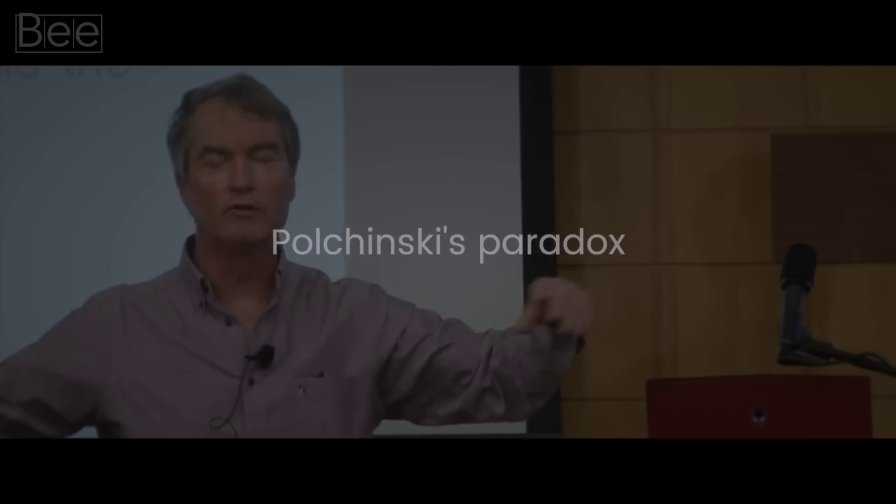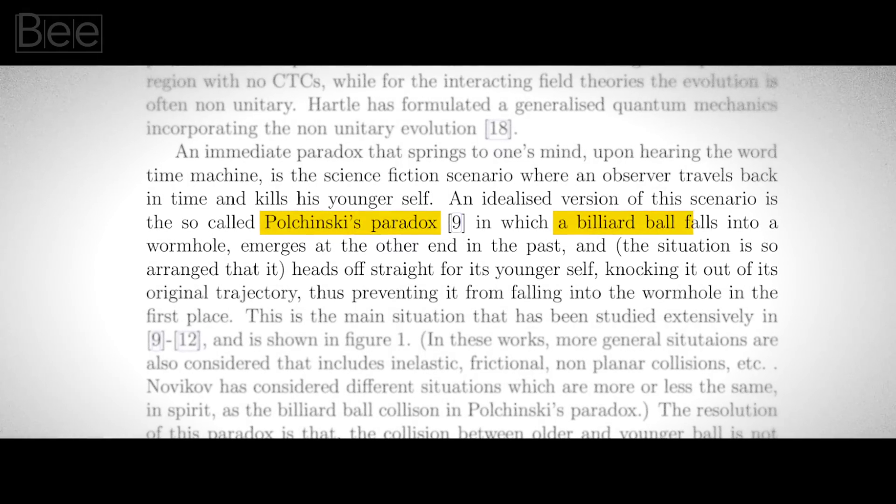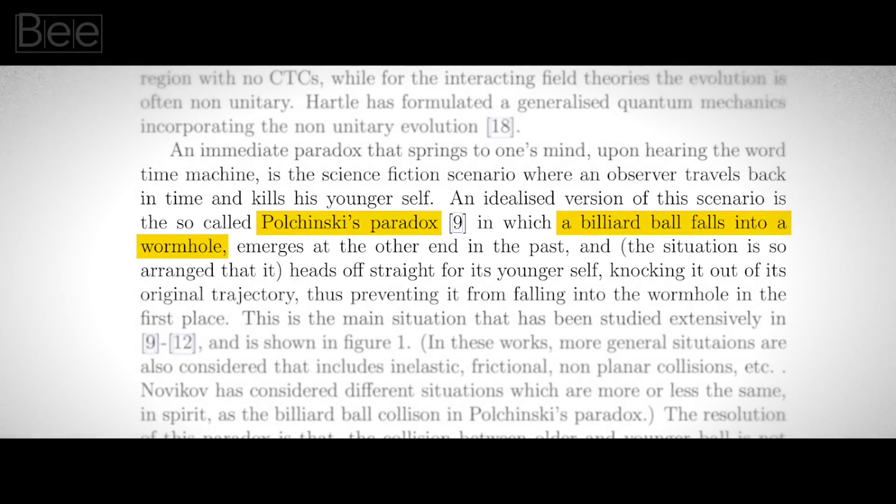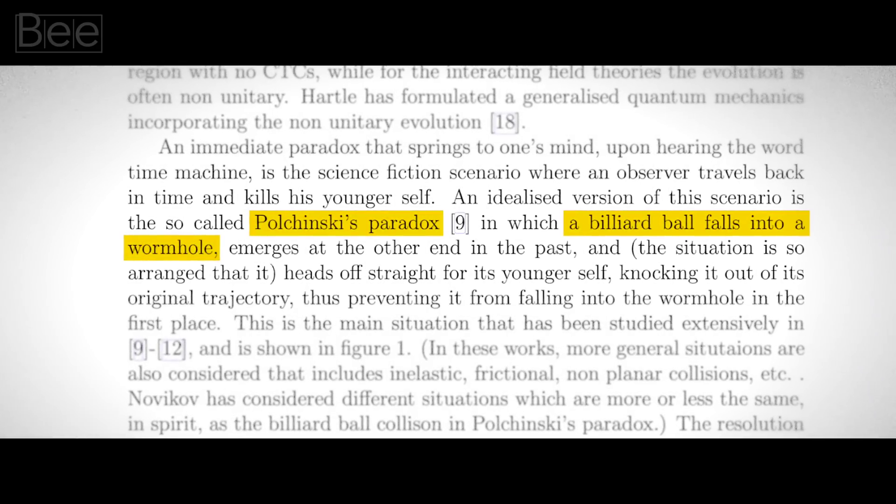Theoretical physicist Joseph Pulchinski thought about this situation, which now becomes the Pulchinski's paradox. It's basically the billiard pole version of this scenario. Meaning, instead of person B, we have the billiard pole that is sent through one portal of the wormhole.